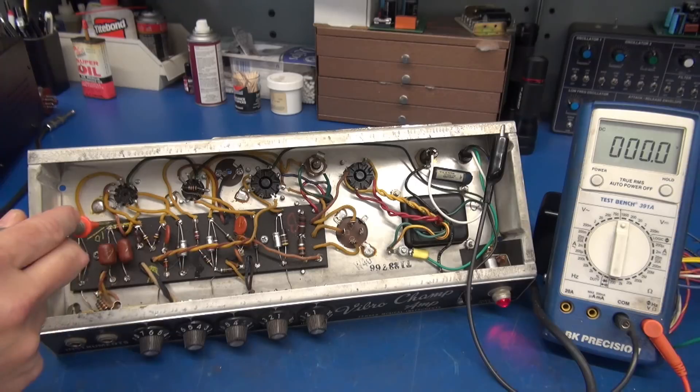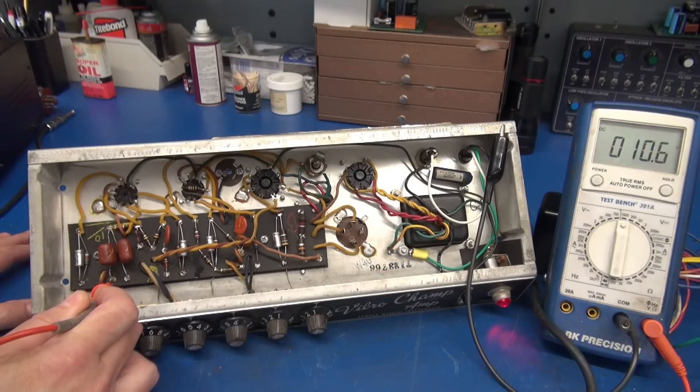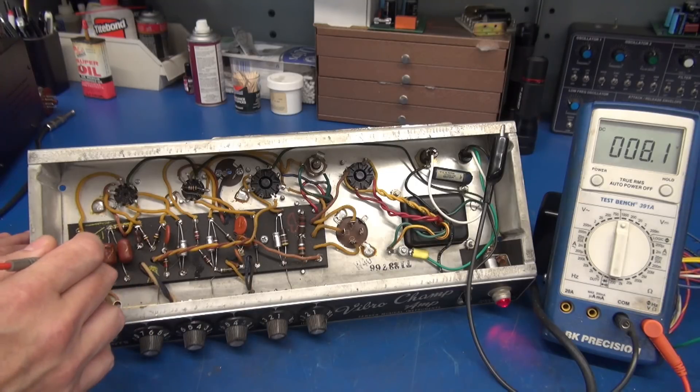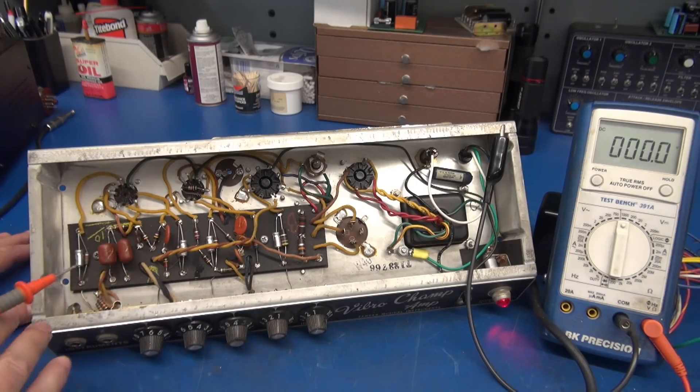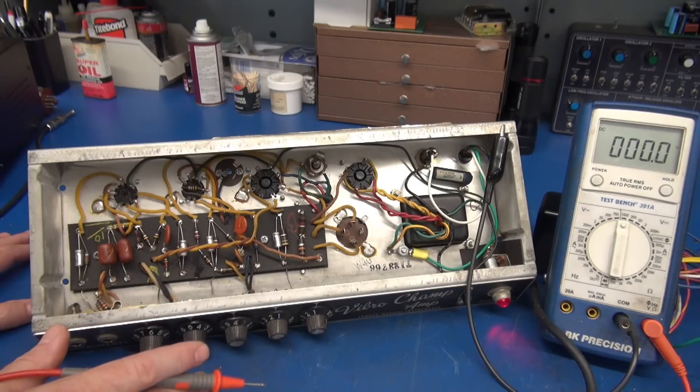Remember, caps are supposed to pass the signal but block DC and these little brownie bites are notorious for being bad. So let's go to this side and check. We should have our high voltage, we do. I'm going to go to the other side of the point one - look at there, 16 volts. The 047: 8 volts.